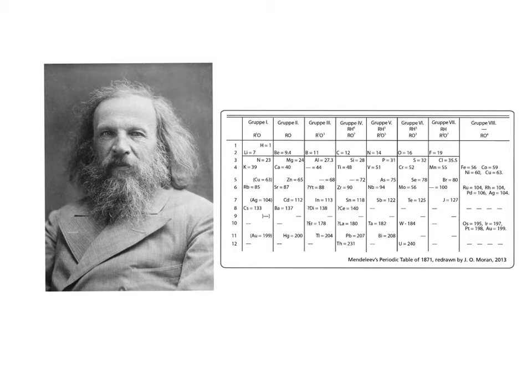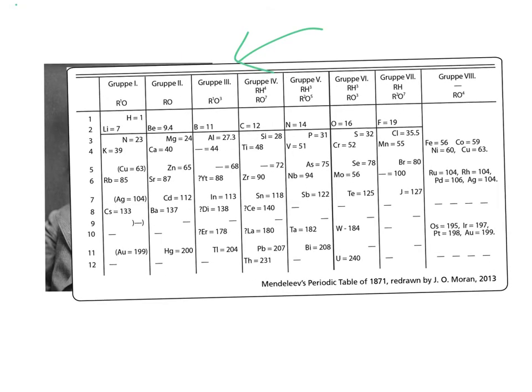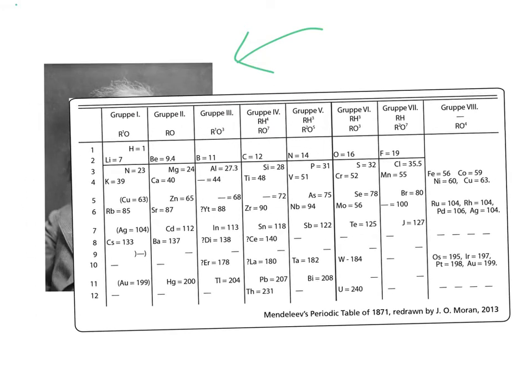Though other scientists had developed their own versions of the table, a Russian scientist named Dmitry Mendeleev had the most comprehensive one. It was so good that he was able to leave gaps in the table where he predicted that elements that had yet to be discovered would fit.